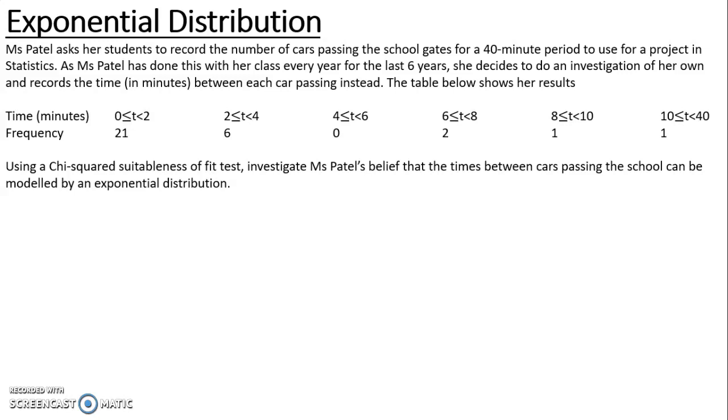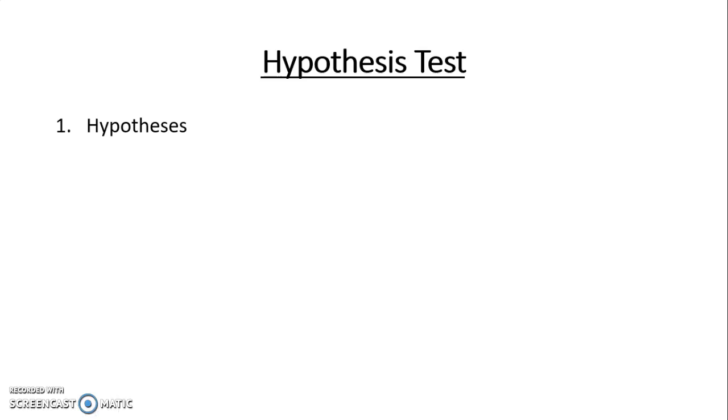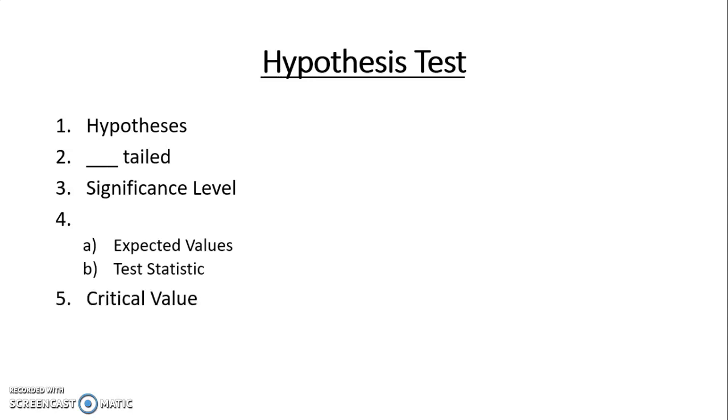So we start by looking at our seven steps for any hypothesis test: we write our hypotheses, we look at the tail, the significance level. To calculate the test statistic we first need our expected values, then a critical value. We compare the critical value and the test statistic, and we conclude as to whether we accept or reject H0 in context.